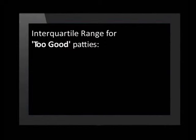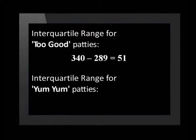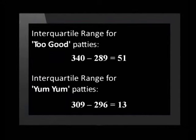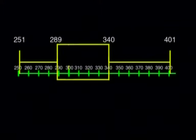Now let's see what the interquartile range has shown us about the data. The interquartile range of the Two-Goods is 51 grams, and the interquartile range of the Yum-Yums is 13 grams. There's a big difference. This tells us that the Two-Good patties are more spread out right across the data, not just at the ends. The smaller interquartile range of the Yum-Yums shows us that the sizes of the patties are far closer to each other — only a difference of 13 grams.